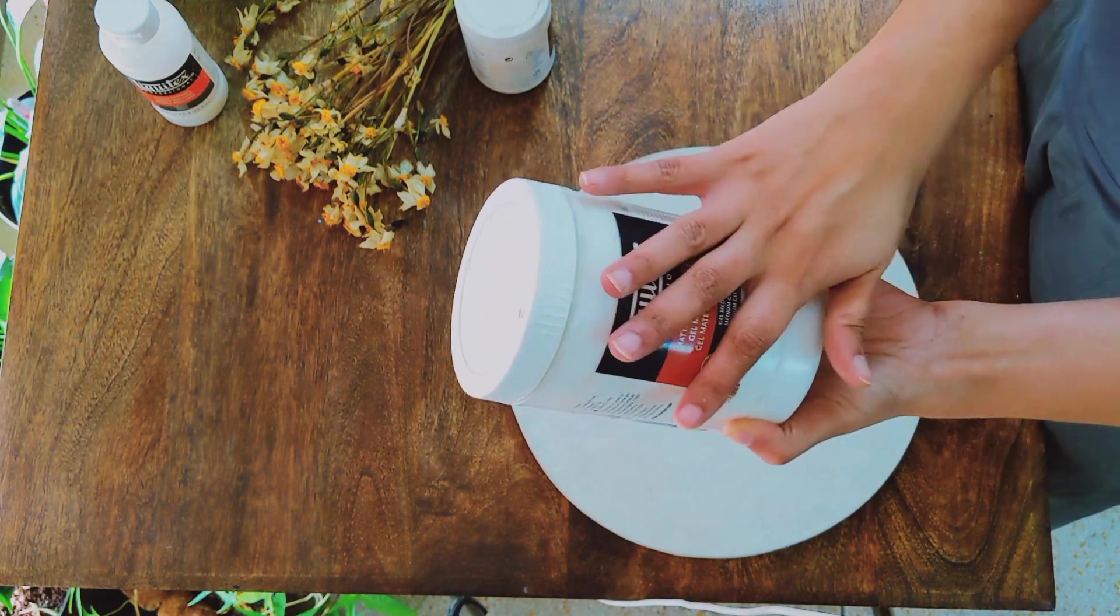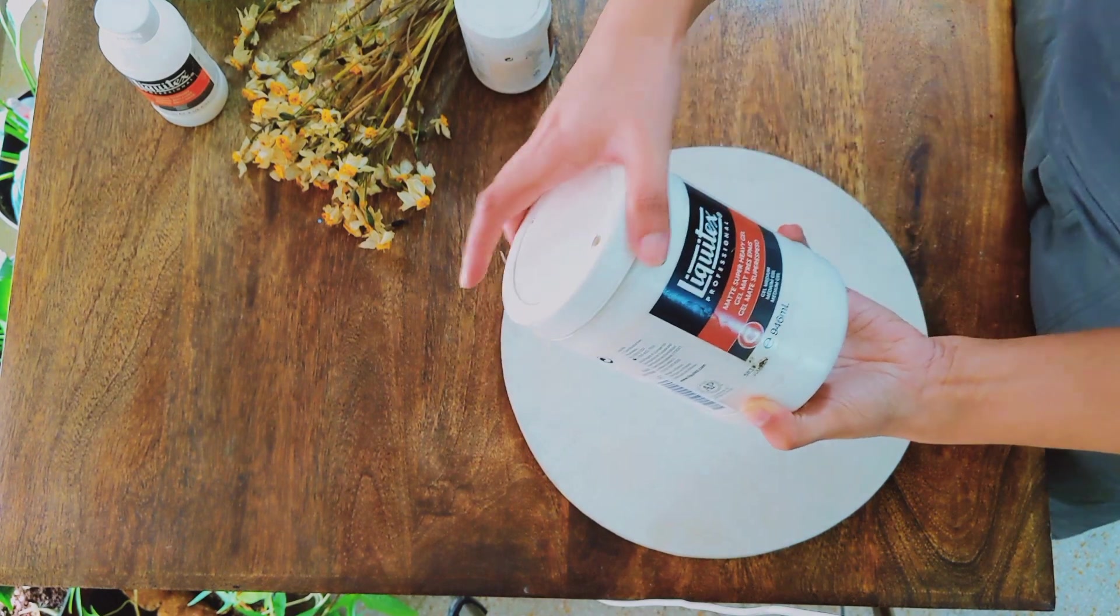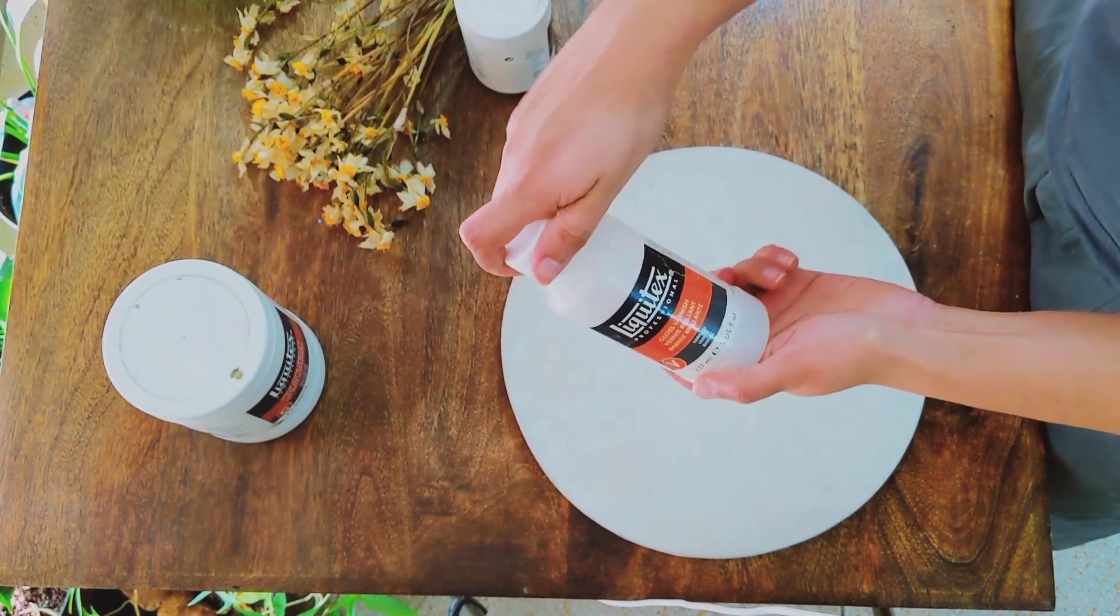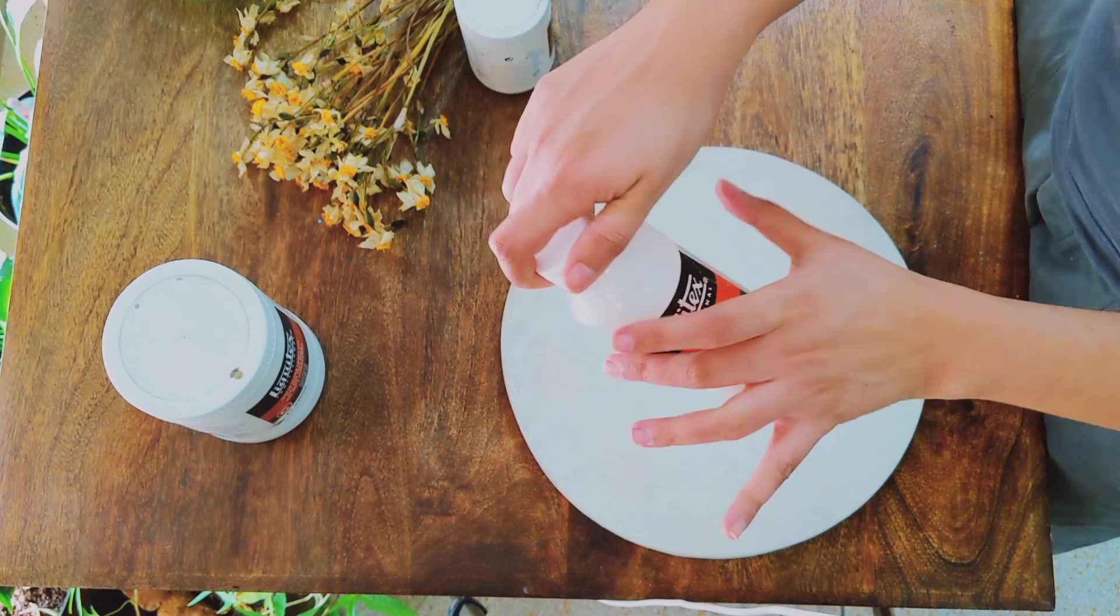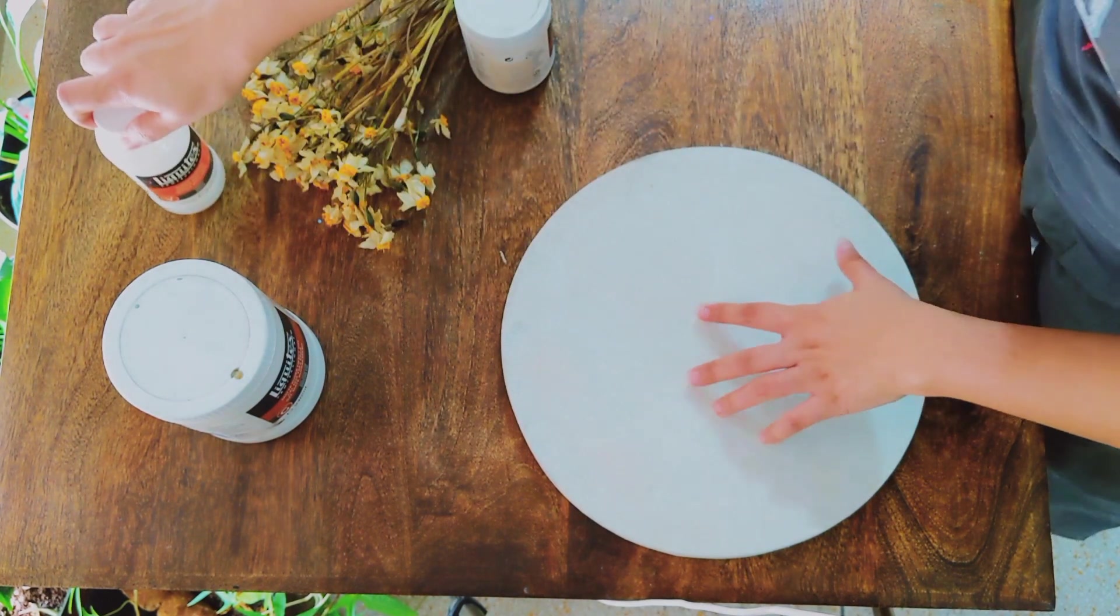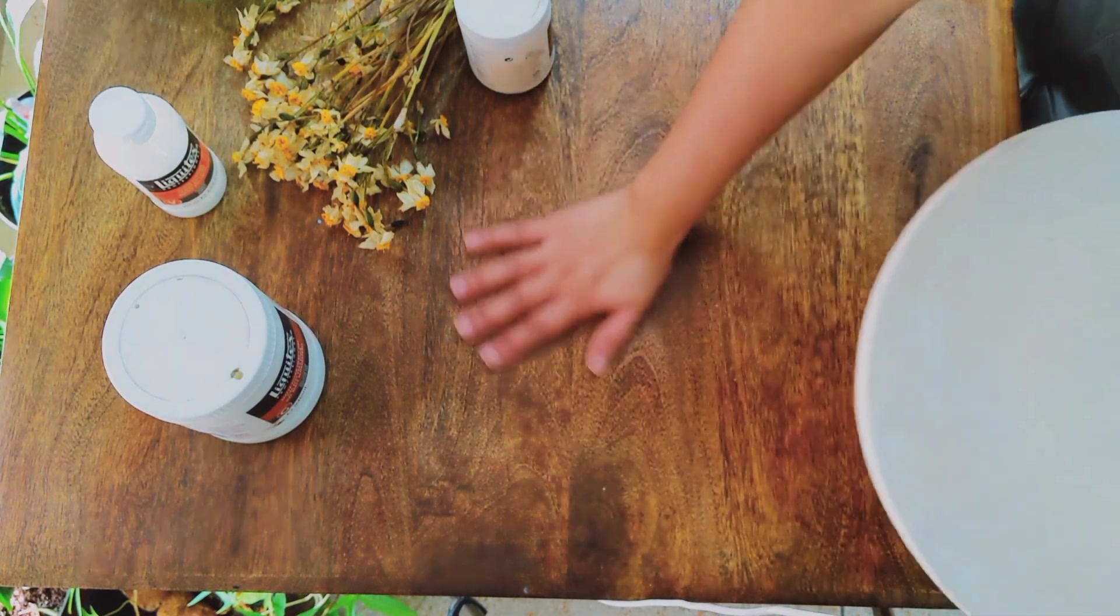One of the ways that this can be made glossy is that you use the matte gel, but then you can always apply gloss varnish on top. So this should work.